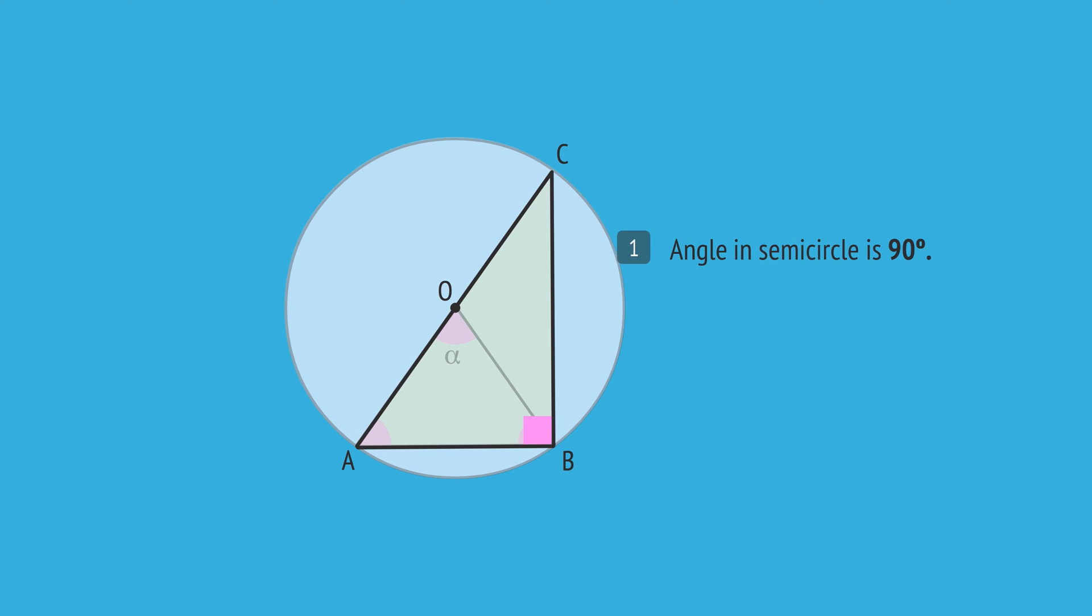First, notice that ABC is a right-angled triangle, as the angle in a semicircle is always 90 degrees. If we could find an expression for one of these angles, we could use a trig ratio to give an expression for BC. Notice that we have this isosceles triangle, formed by 2 radii of length x. So these base angles are equal.